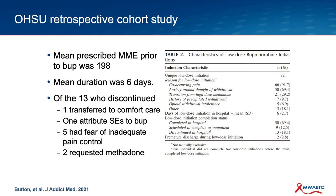Since that was published, there have been two larger retrospective inpatient studies. One out of OHSU had 72 patients enrolled. They looked at why clinicians chose to do a microdosing induction — a lot had to do with co-occurring pain in the inpatient setting, but some had anxiety around experiencing withdrawal, were transitioning from high-dose methadone, or had a history of precipitated withdrawal. About 13% of patients had to discontinue microdosing induction, but the vast majority — 70% — completed it in the hospital, and 12% were scheduled to complete it as an outpatient.